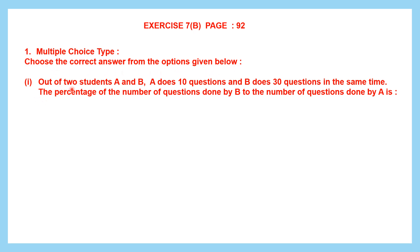First one: out of two students A and B, A does 10 questions and B does 30 questions in the same time. We have to find the percentage of the number of questions done by B to the number of questions done by A.